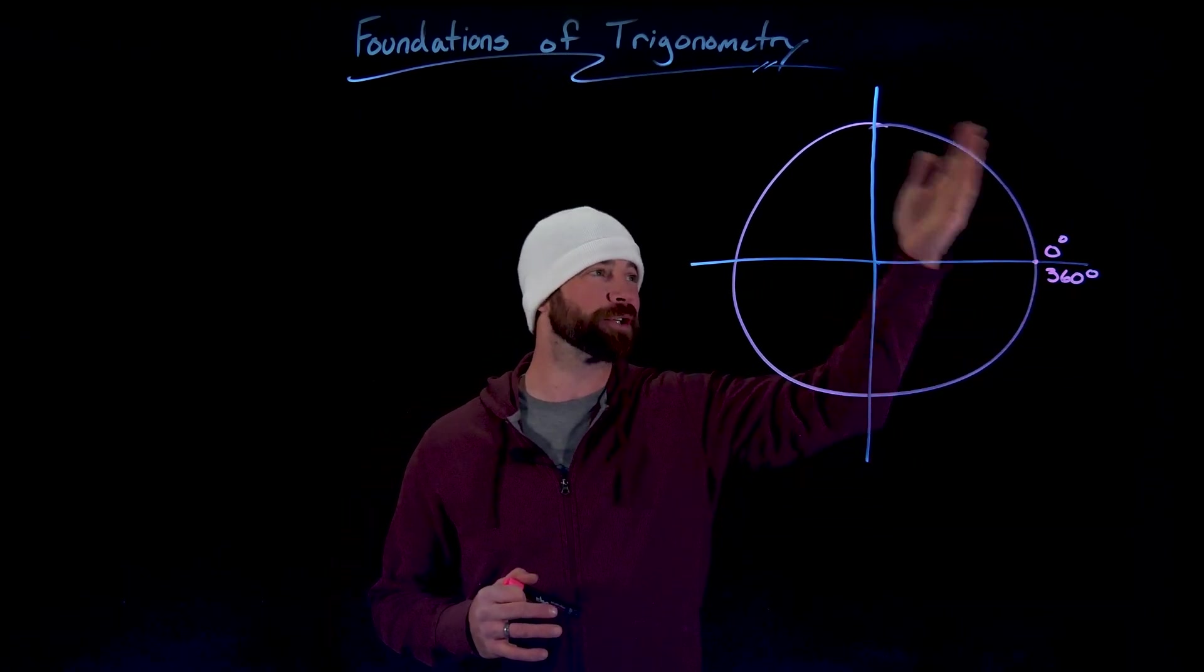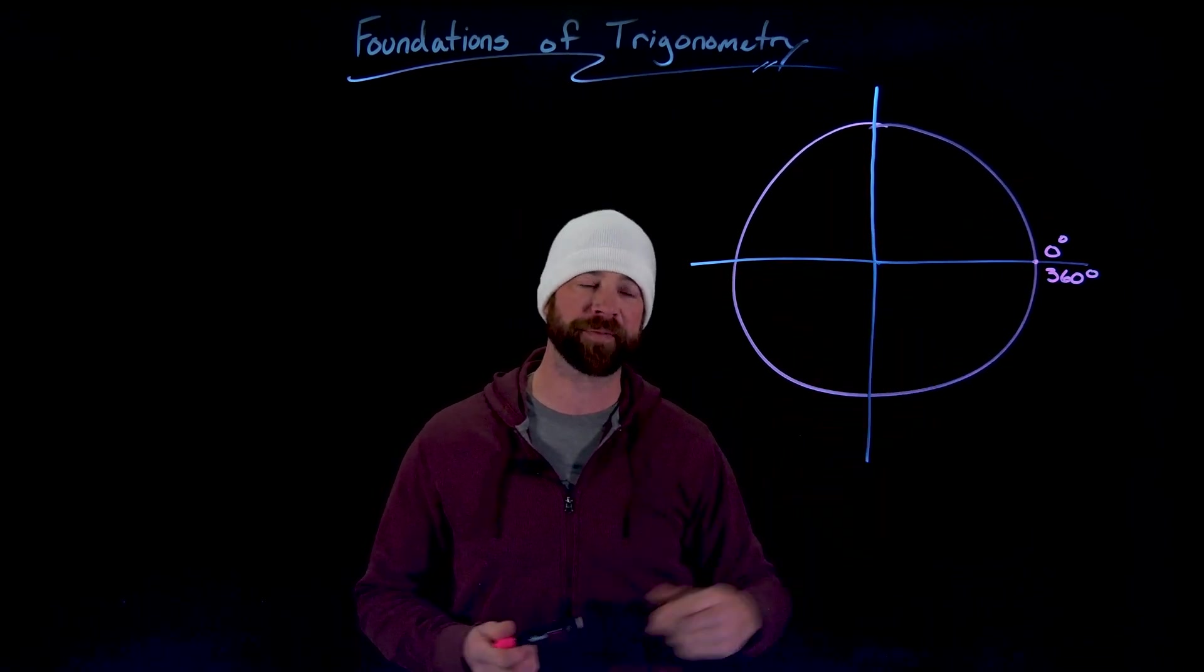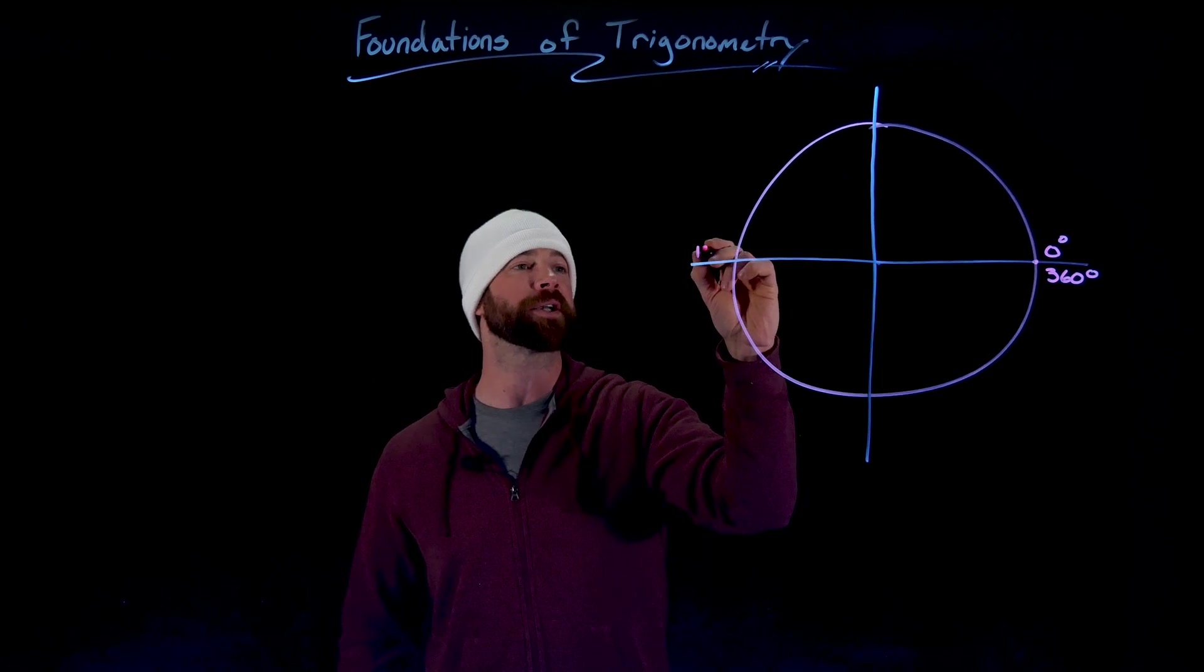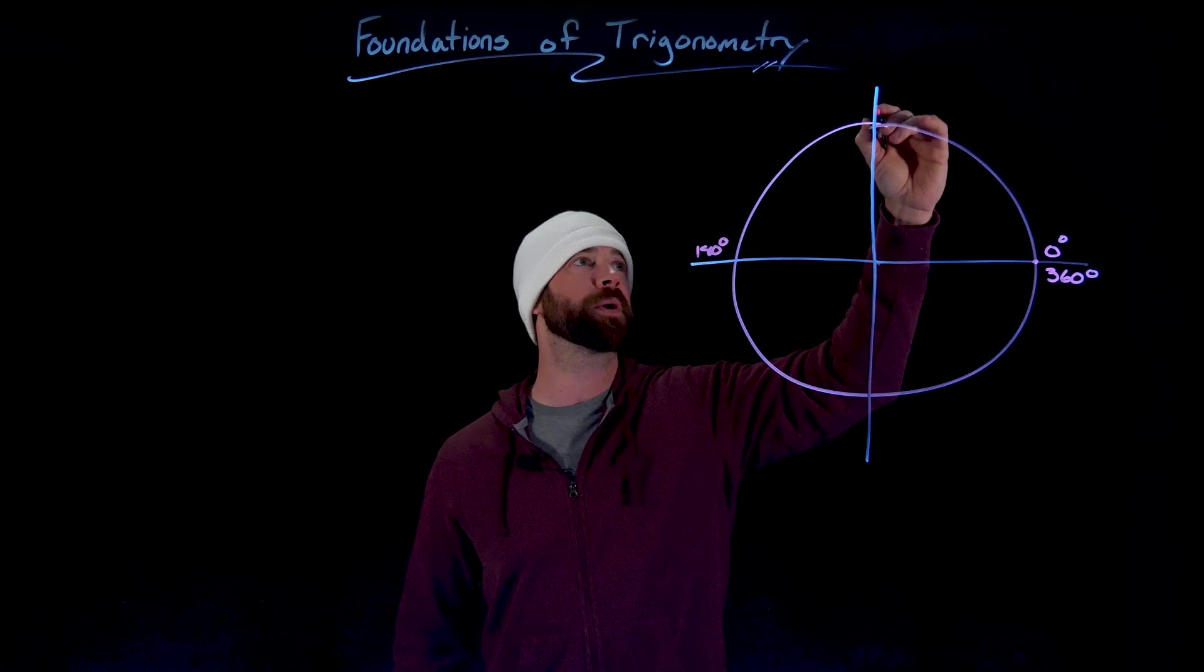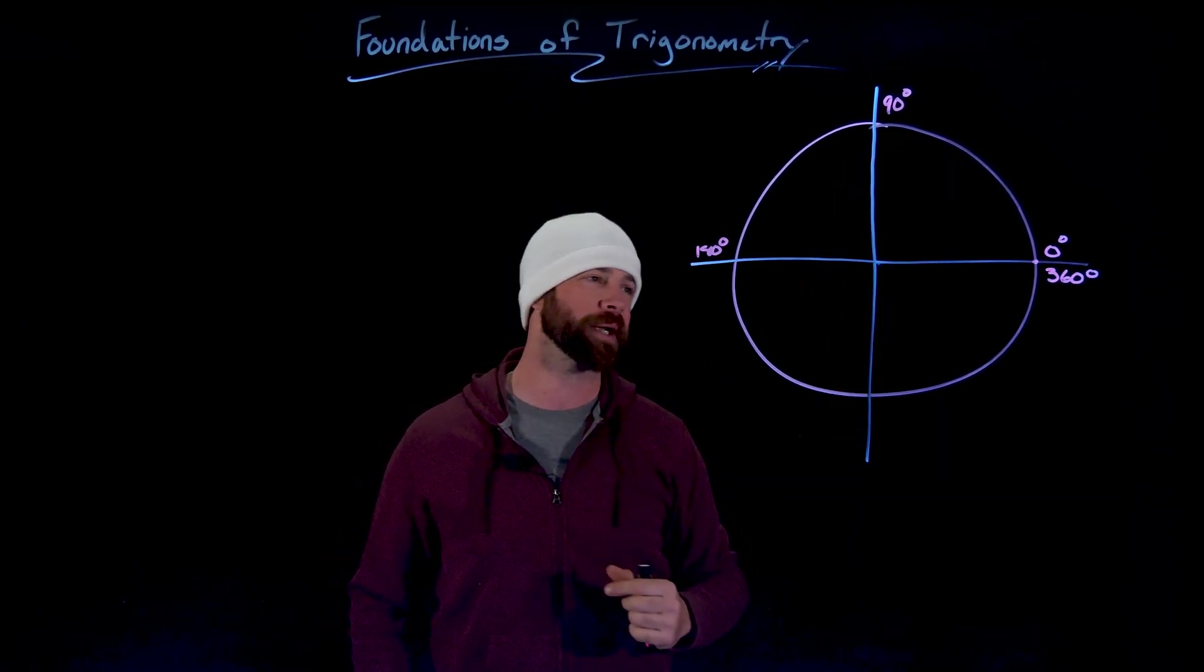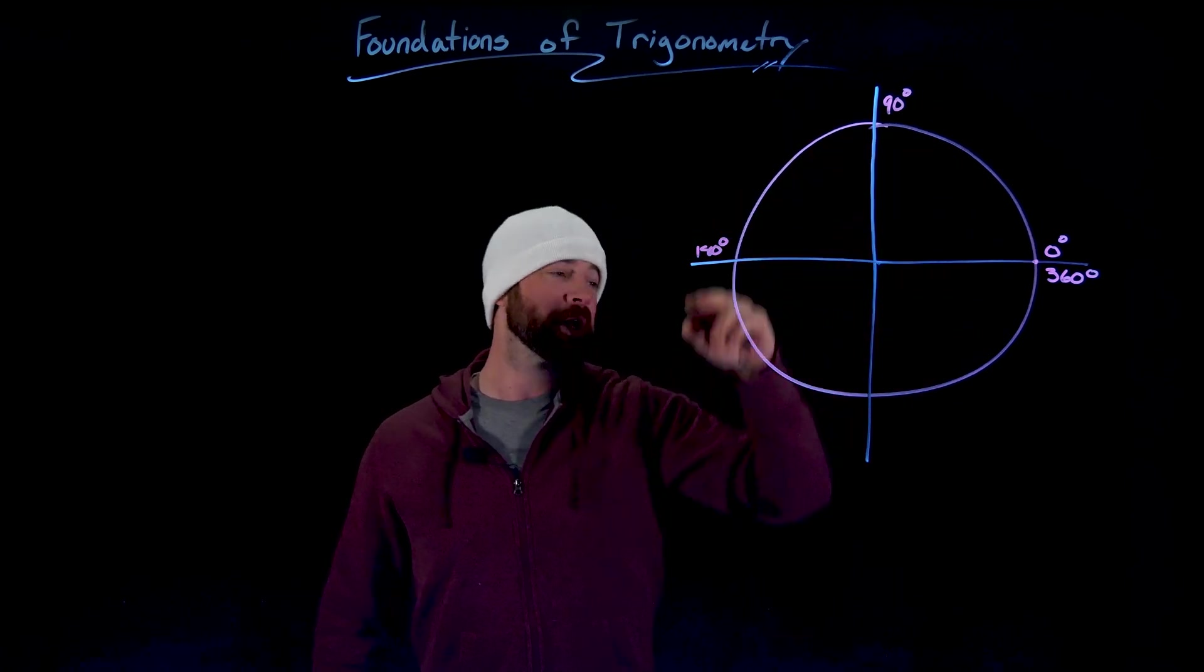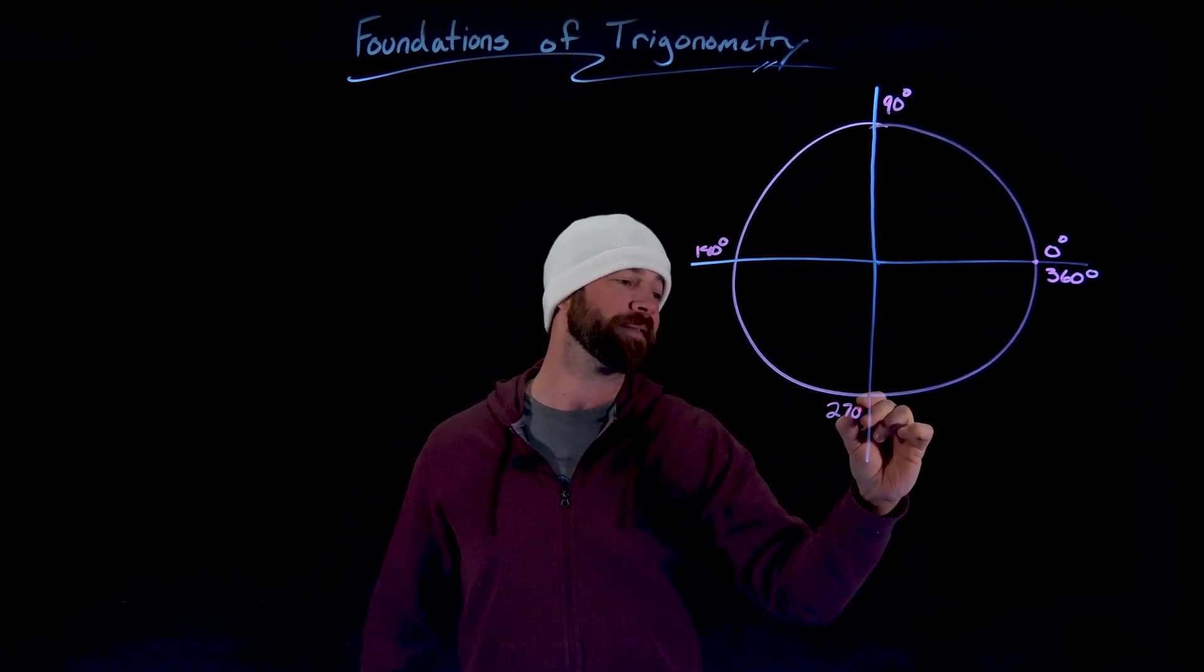Then if we know a full circle is 360 degrees, we know if we go half a circle, we would get half of the degrees, which would be 180 degrees. If we go a quarter of the way or between zero and 180, we would get 90 degrees. We know about 90 degree triangles, right triangles. If we went three fourths of the way around, we would have 270 degrees.